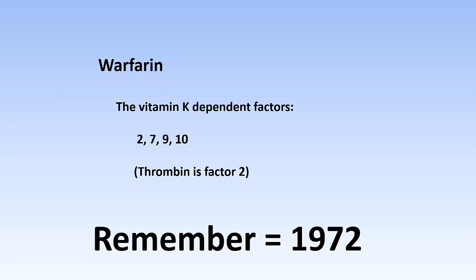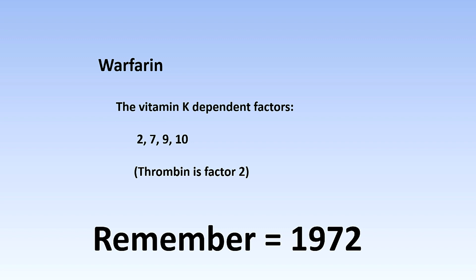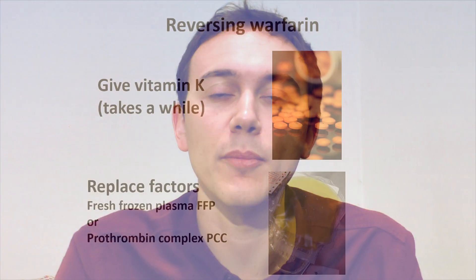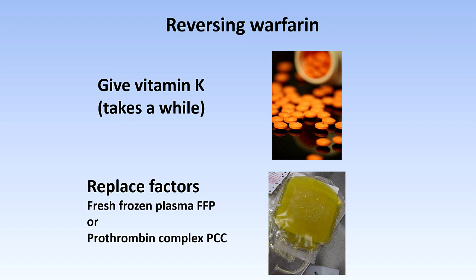If you're a medical student, the question of which are the vitamin K dependent factors — in other words, which ones are affected by warfarin — always seems to crop up. The easiest way to remember that is by remembering the year 1972: so that's 10, 9, 7, and 2. Warfarin inhibits an enzyme which recycles vitamin K, so it can be reversed by giving the patient vitamin K. If you need to reverse it very quickly — for example if a patient is having a significant bleed while on warfarin — you can give them the factors they need in fresh frozen plasma, or use a combination of factors in a preparation such as octoplex.